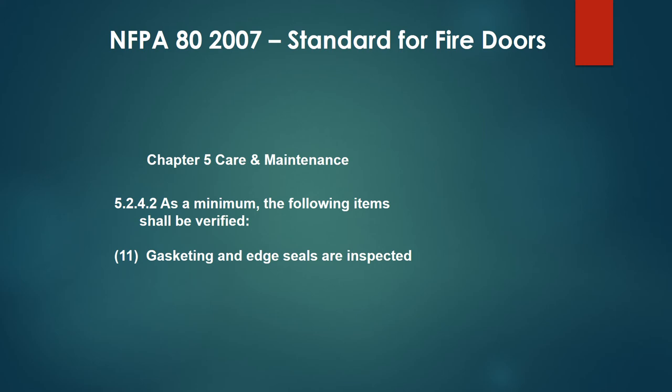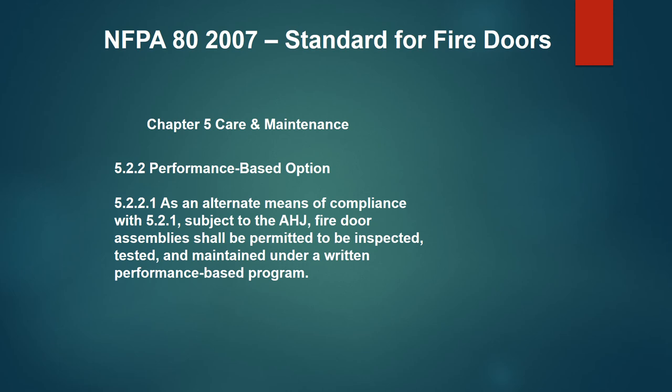Requirement number 11: gasketing and edge seals must be inspected. This comes down to knowing what type of doors you have and what edges, seals, and gaskets they require — whether it's intumescent material for fire doors or smoke gaskets for smoke doors. Knowing the differences is critical. There is an option to get relief from some of this maintenance through what's called a performance-based option.